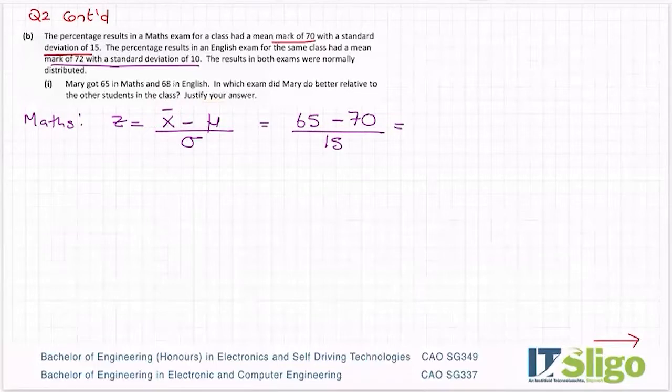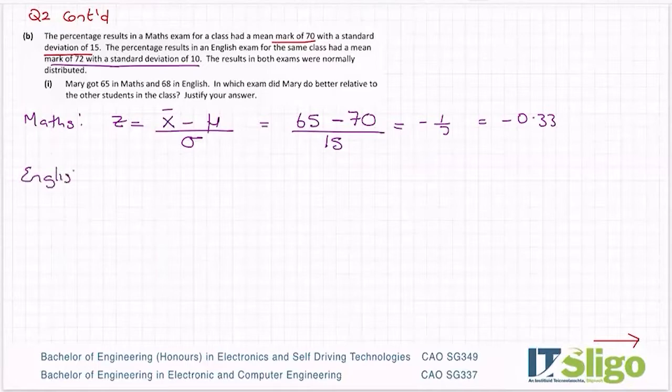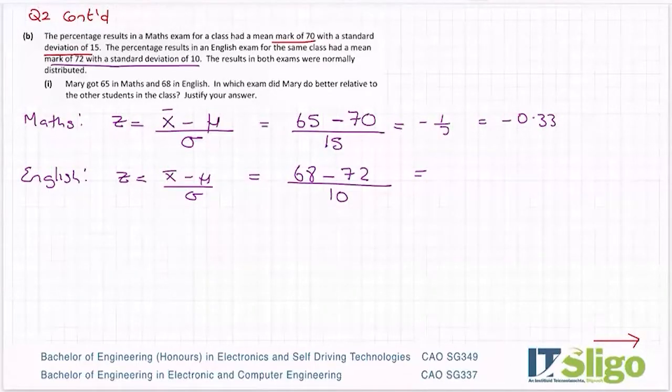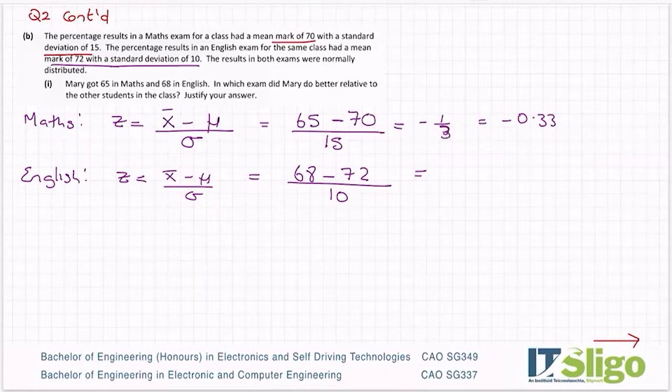You compare the result, that's the value that you're testing minus the mean over the standard deviation. For Mary, it's 65 minus the mean in maths was 70, standard deviation was 15. So 65 minus 70 all over 15. She's minus a third down from the mean, or minus 0.33. And then how did she do in English? It's the same formula. I'm going to compare Mary's English mark, which was 68, to the mean of that class, which was 72 over the standard deviation, which was 10. And that's minus two fifths or as a decimal minus 0.4.